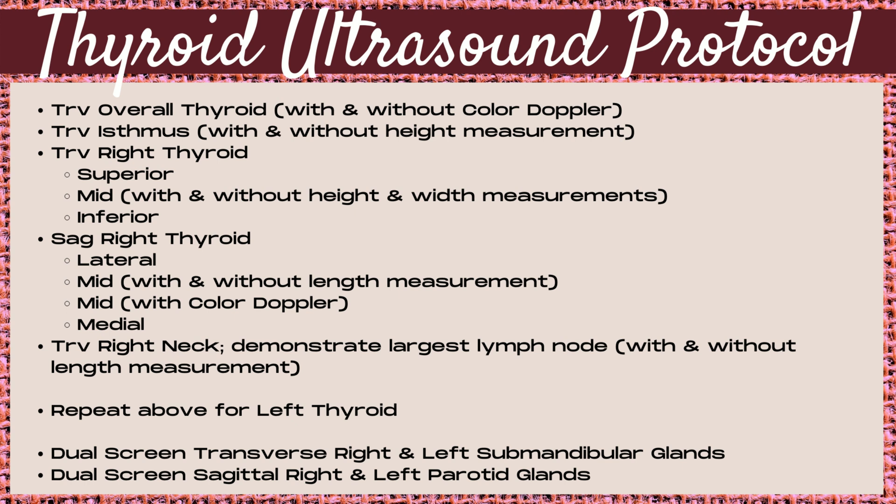Next you want to move on to the isthmus, and these images should be taken with and without an AP or height measurement of the isthmus. Then move on to the transverse right lobe of the thyroid, taking images of the superior, mid, and inferior portions. For the midsection, take images with and without height and width measurements.